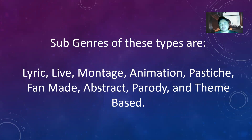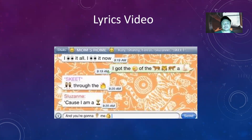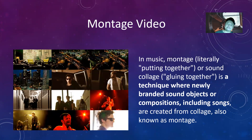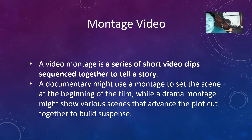There are also sub-genres of these three types of music video: lyrics video, live, montage, animation, pastiche, fanmade, abstract, parody, and theme-based. A lyrics video is simply a video with the lyrics displayed. A montage is when you combine and edit together shots you have into one piece, so viewers can appreciate the artistic nature of the combined footage. A video montage is a series of short video clips sequenced together to tell a story.